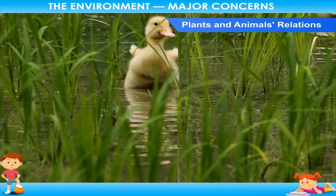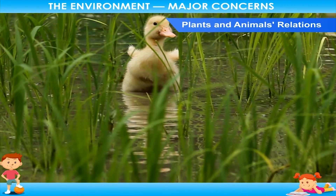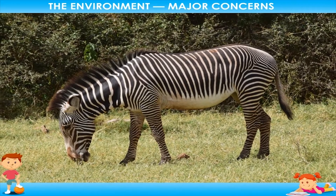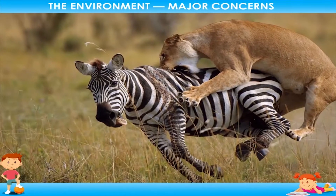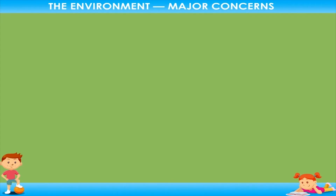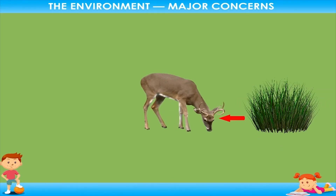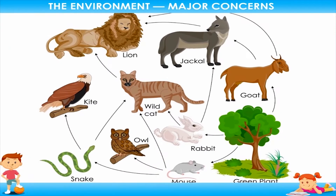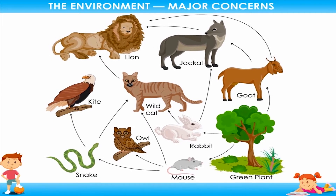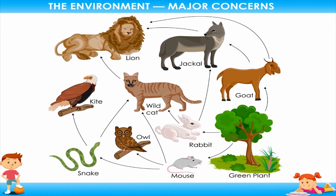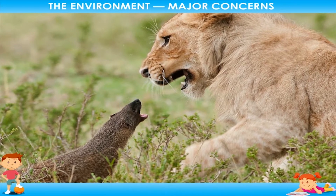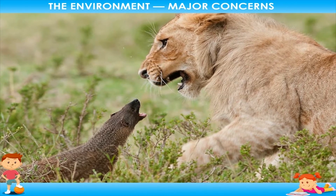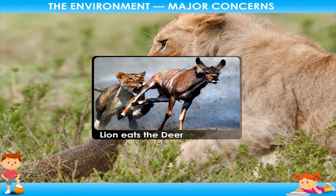Plants and Animals Relations: Animals depend on plants for food. Herbivorous animals eat plants and carnivorous animals eat other animals. This connection makes a food chain in the environment. A food chain is a series of organisms that depend on the next as a source of food. In the jungle, smaller animals are killed and eaten by larger animals. For example, the lion eats the deer and the deer eats the grass.